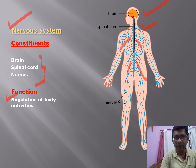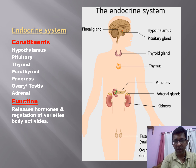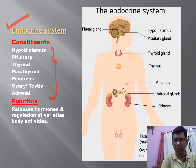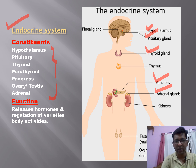The endocrine system is related to hormones. The organs that secrete hormones include the hypothalamus, pituitary, thyroid, parathyroid, pancreas, ovary or testis, and adrenal glands. The hypothalamus and pituitary are located in the brain, the thyroid gland is in the neck, and the pancreas and adrenals are in the abdomen. Their function is to release hormones and regulate varieties of body activities, with each hormone having its own specific function.